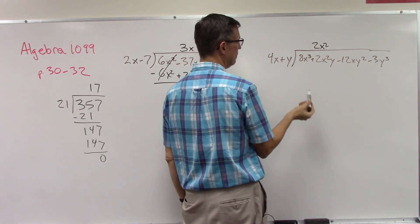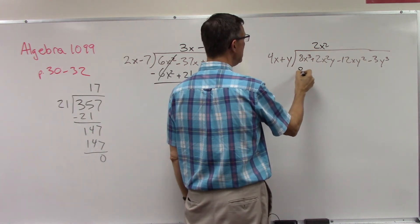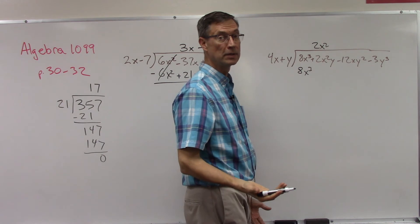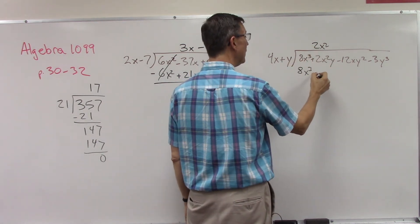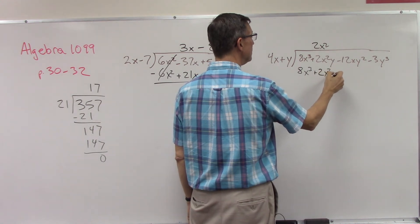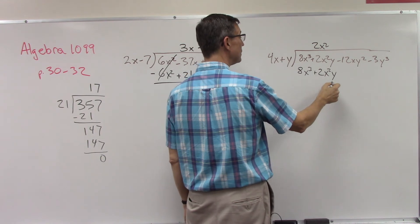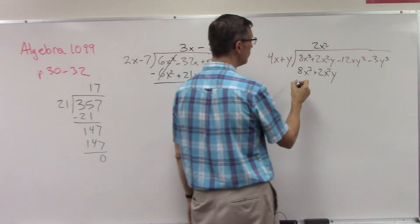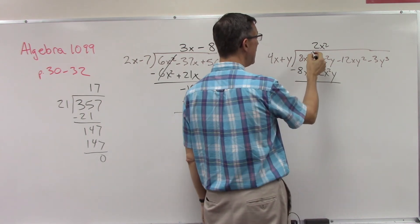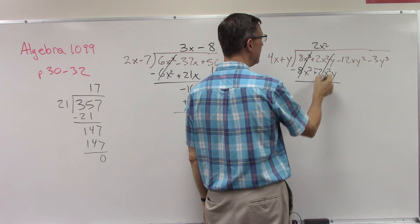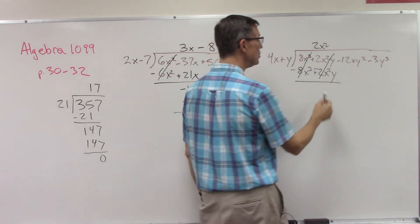Now I can take the 2x squared times both of these terms. First of all I get 8x to the third, and we should get that because that's the whole reason we did it. Now I'm going to take the 2x squared times the y. 2x squared times y is 2x squared y. Now draw a line, change these to their opposites and add. That cancels out, that cancels out too. So now I can jump all the way over to this term, negative 12xy squared.